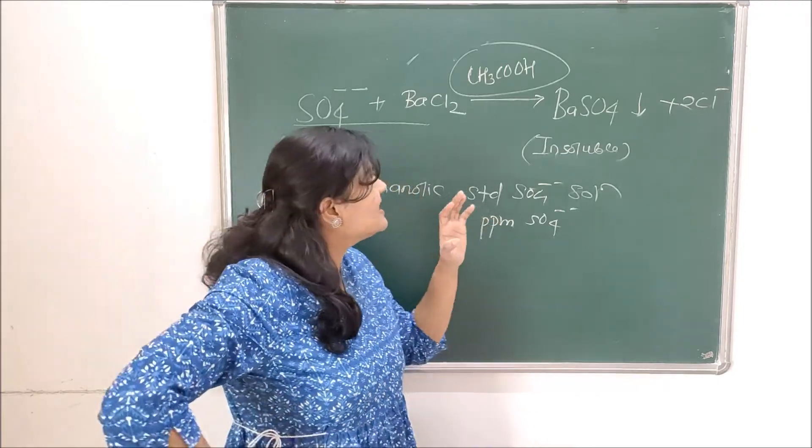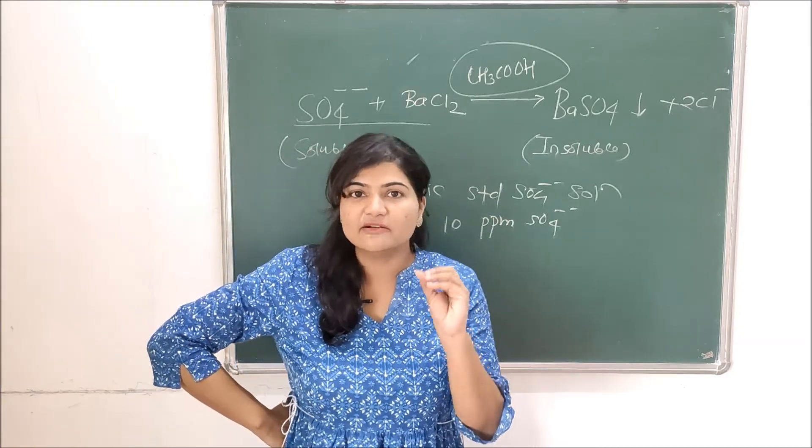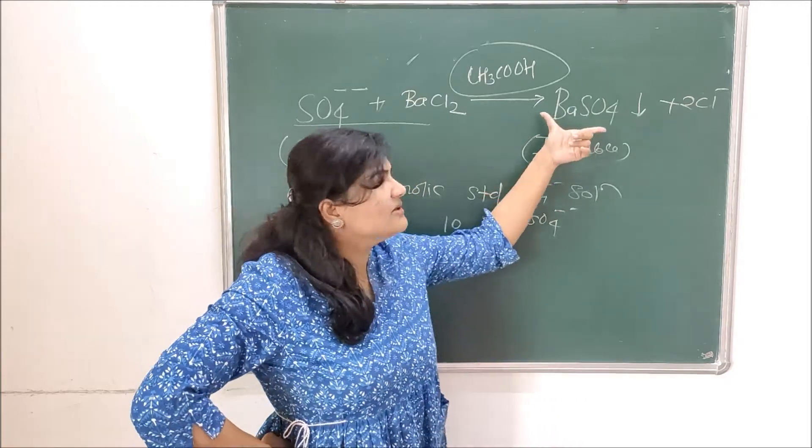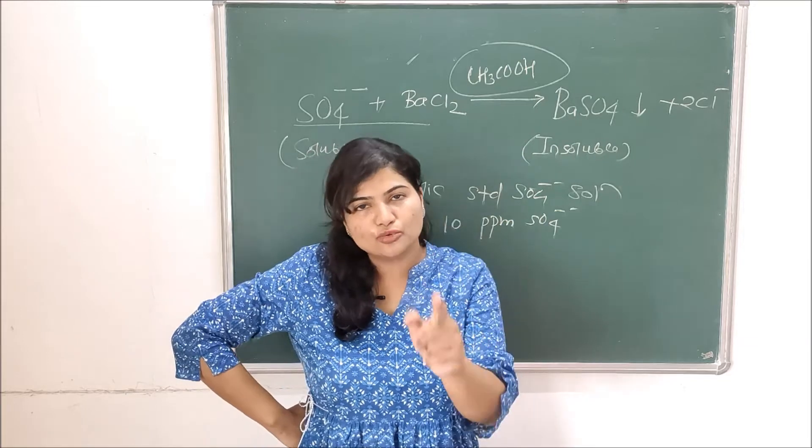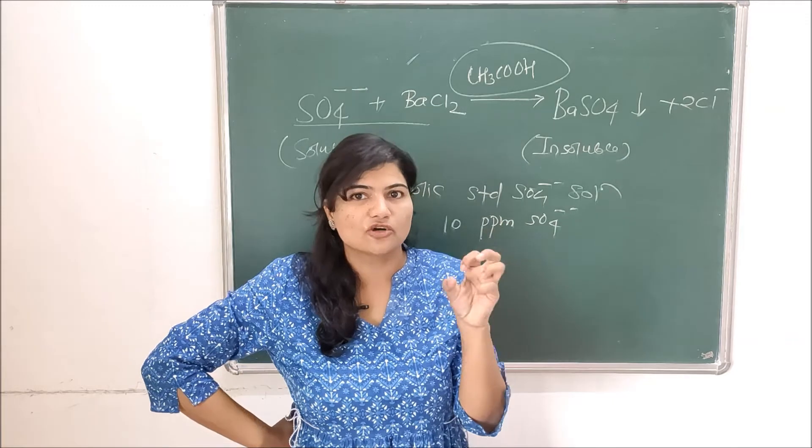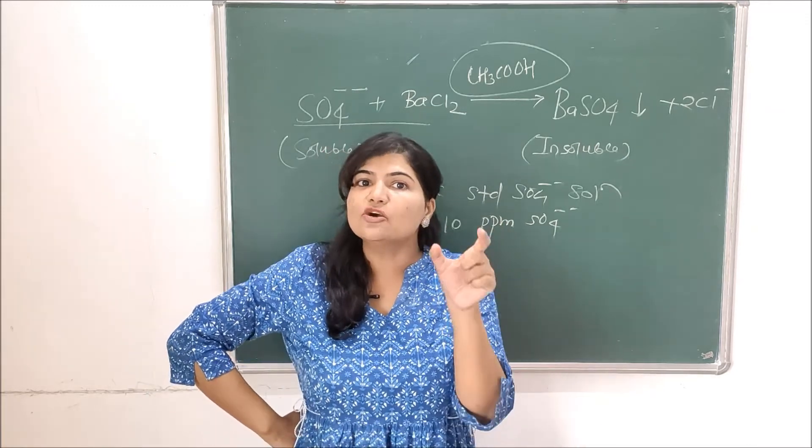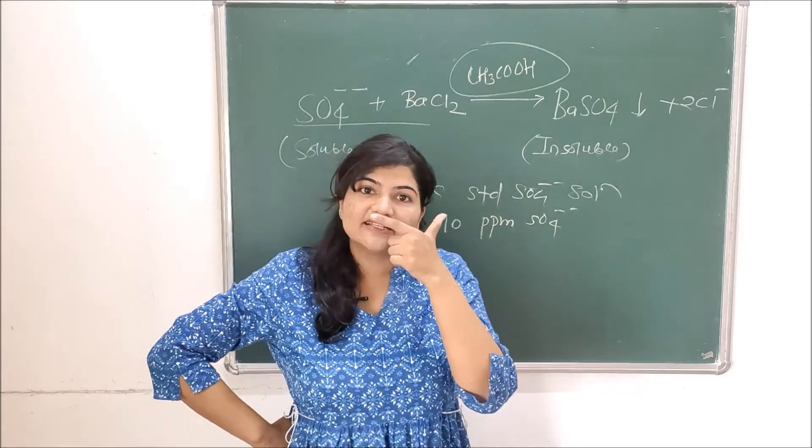One more point I want to tell you is the initial ionic concentrations are determined or taken in such a way that the solubility product of barium sulfate gets slightly exceeded. When the solubility product is exceeded by the ionic concentration then it starts to precipitate.